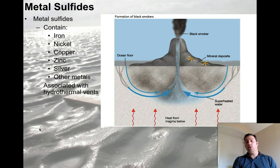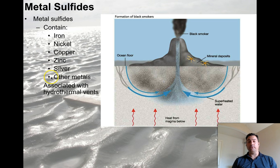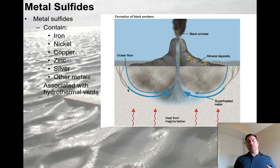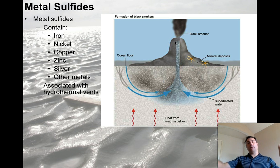Metal sulfides are all over the seafloor and usually associated with mid-ocean ridges. They contain iron, nickel, copper, zinc, silver, gold, uranium — all kinds of metals. They're usually associated with hydrothermal vents, which are powered by heat from magmas below the mid-ocean ridges. The ocean floor constantly pushes water under very high pressure into the rocks; that water heats up and convects out through a black smoker. The black smoker is essentially raining out iron sulfide, nickel sulfide, and copper sulfide that we might have economic interest in.